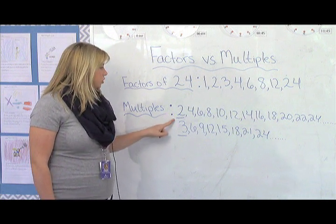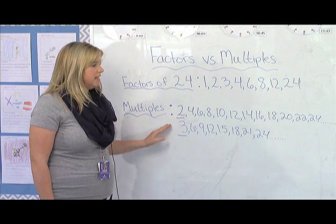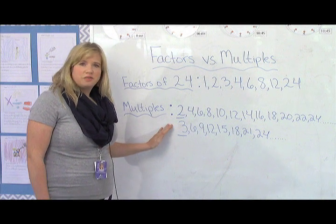So multiples of 2 would be 2, 4, 6, 8, 10, 12, 14, 16, 18, 20, 24, and so on and so forth.